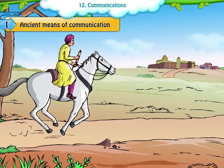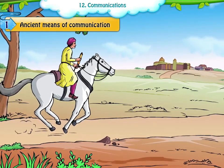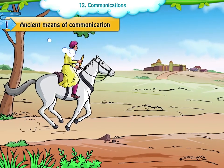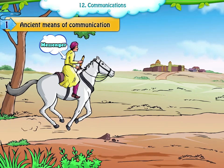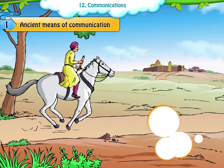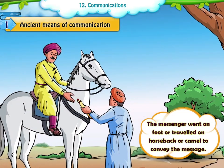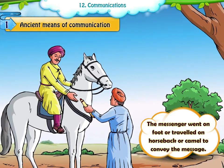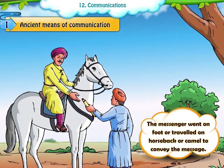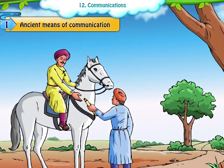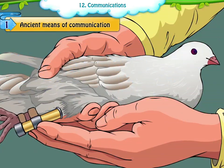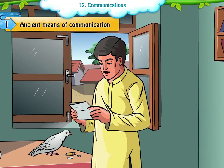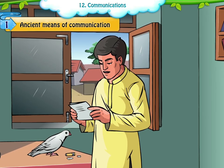Ancient means of communication. In ancient times, people sent messages through a messenger. The messenger went on foot or travelled on horseback or camel to convey the message. In some places, messages were sent by tying them to the feet of trained pigeons.